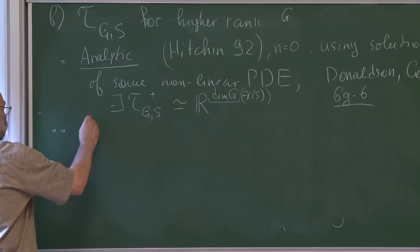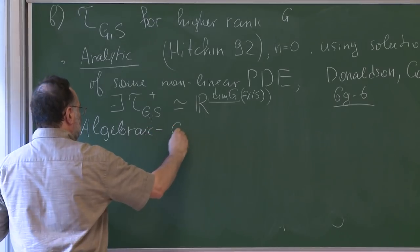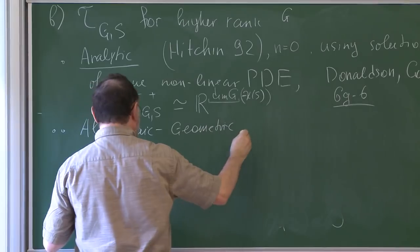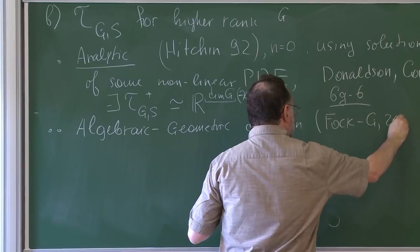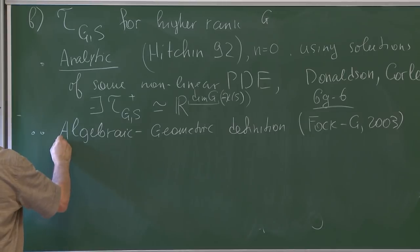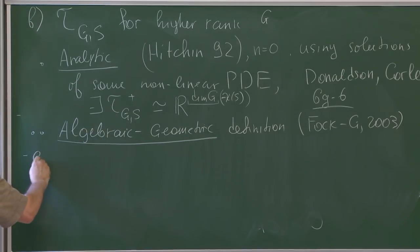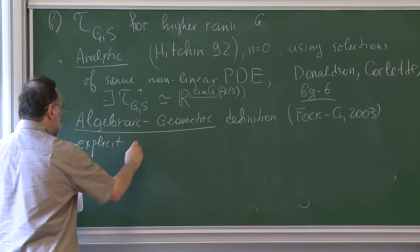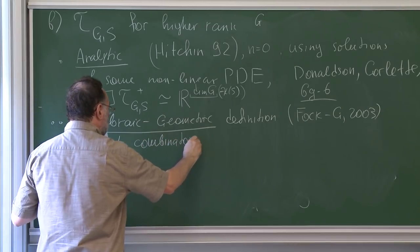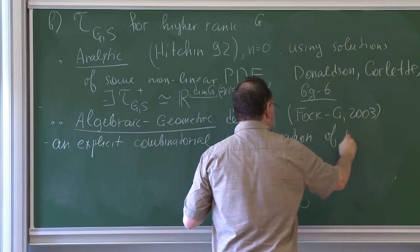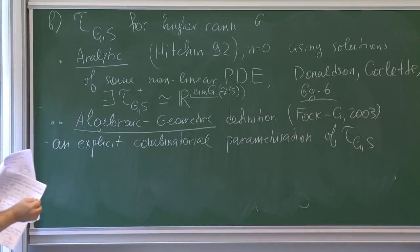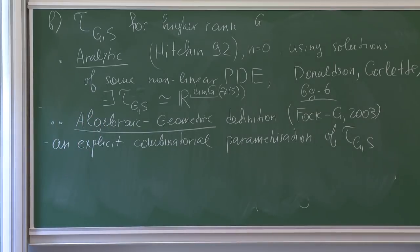Another approach is an algebraic-geometric definition — our joint work with Volodya Fock. It gives an explicit combinatorial definition and parameterization of the space. It gives something which looks entirely different, and then we prove that it's actually the Hitchin component — that they are compatible.